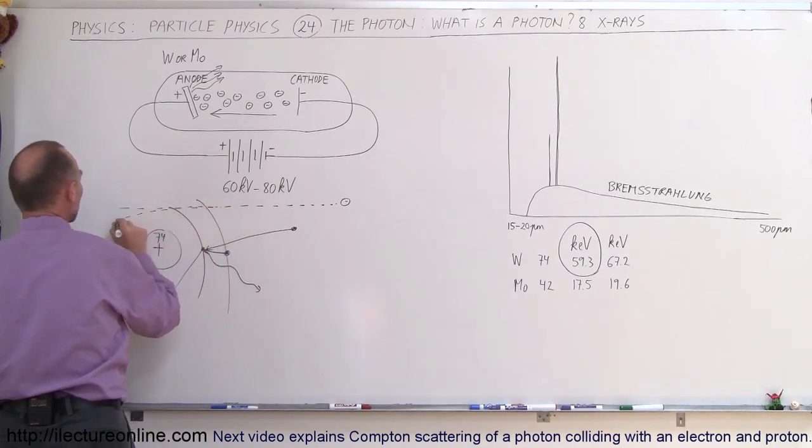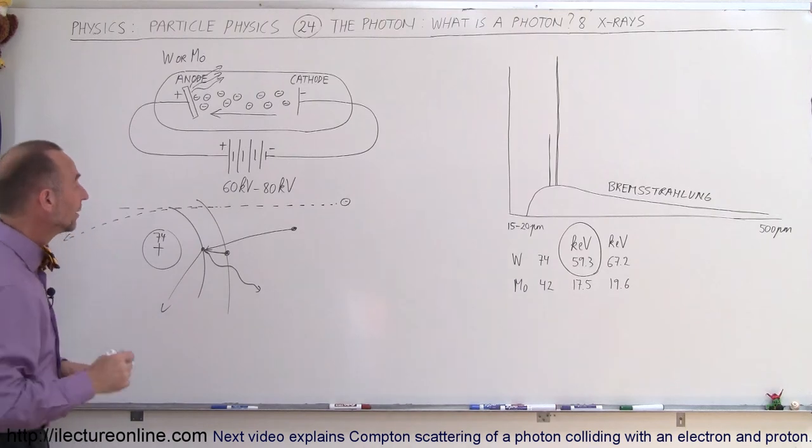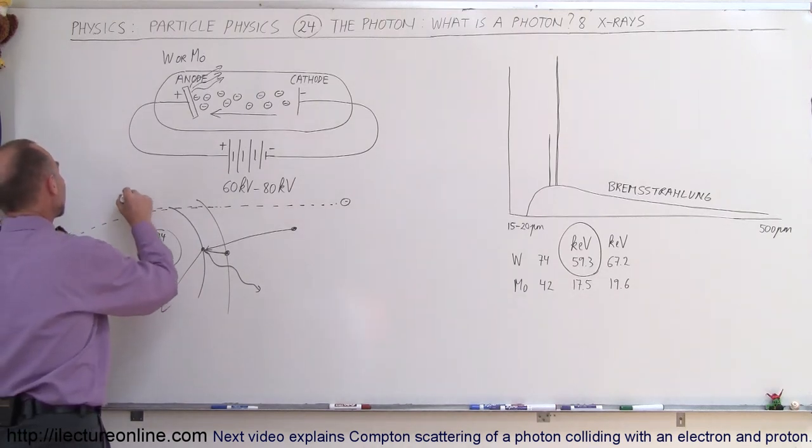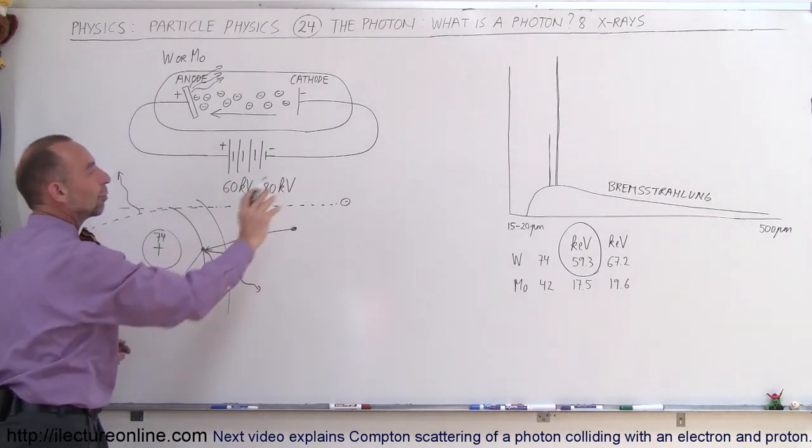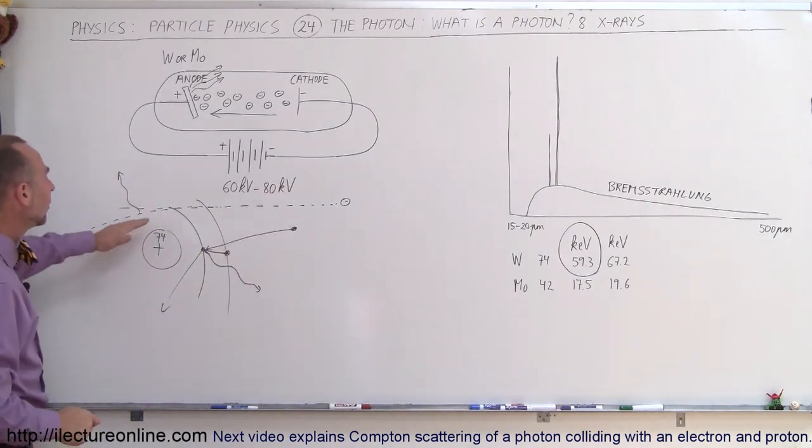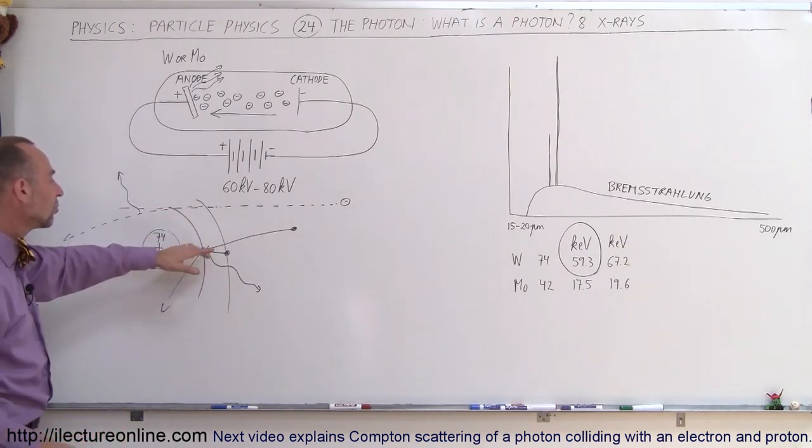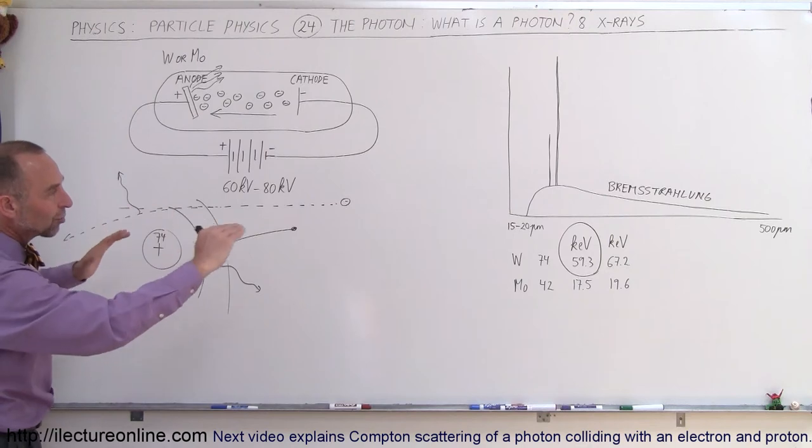But because of the interaction between the electron and the nucleus, this electron will change direction. Therefore, there will be a deceleration. The deceleration causes some radiation then to be emitted, and that radiation will be in the form of an x-ray or a high-energetic UV ray. And so, most of them will, of course, bypass a collision with electrons, and therefore, they will cause that bremsstrahlung radiation.